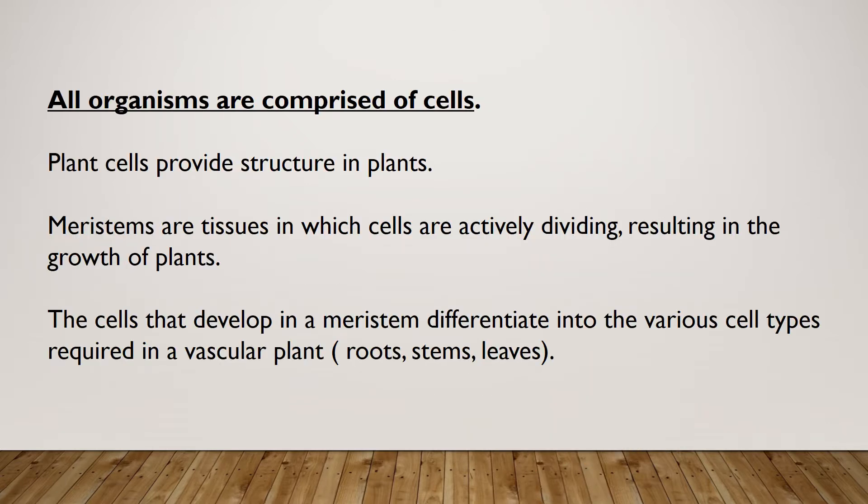All organisms are comprised of cells. Plant cells provide structure in plants. Meristems are tissues in which cells are actively dividing, resulting in the growth of plants. The cells that develop in a meristem differentiate into various cell types required in a vascular plant, such as the roots, the stems, and the leaves.